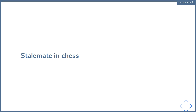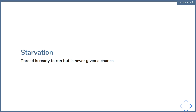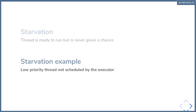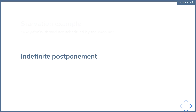The third problem that causes liveness issues is something called starvation. Starvation is when a thread is ready to run but is never given a chance. A real-world analogy is a struggling actor — you might have seriously good talent, but the actor never gets to play in a movie, the sports person never gets to play in a game. The thread is ready to run but is never scheduled by the executor. Threads have priorities — both operating system threads and JVM threads — and a low-priority thread may never be executed by the processor, resulting in indefinite postponement.